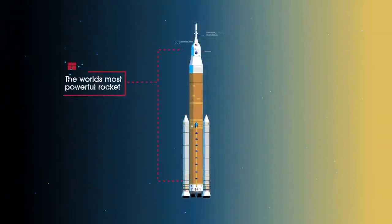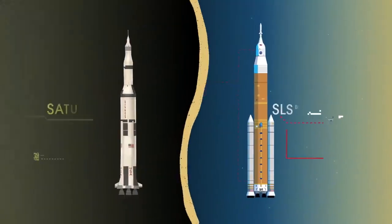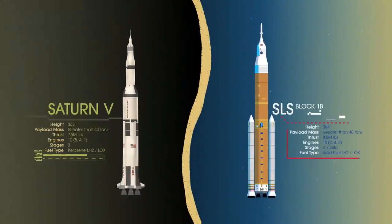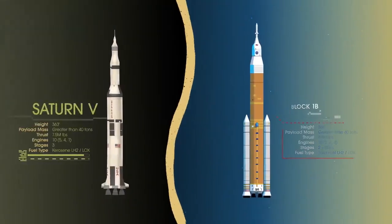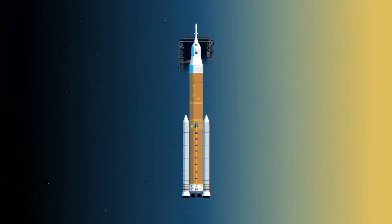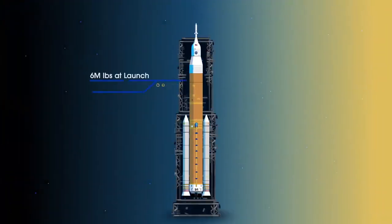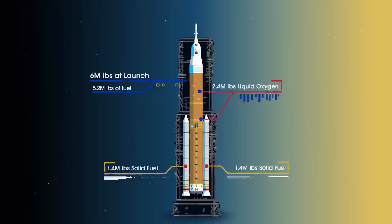Altogether, this is the world's most powerful rocket, and it exceeds the legendary Saturn V of the Apollo era in numerous ways. Sitting on the launch pad, the entire rocket, fully fueled, weighs just over 6 million pounds, 5.2 million of which is just the fuel.